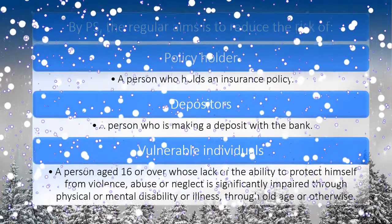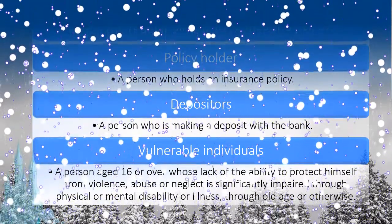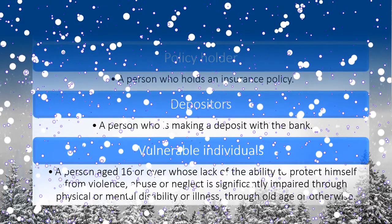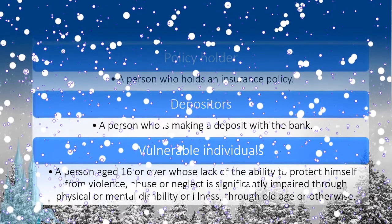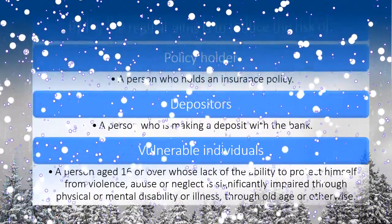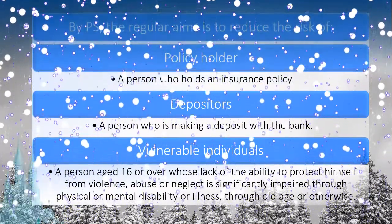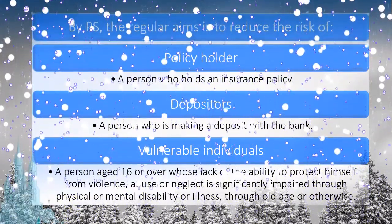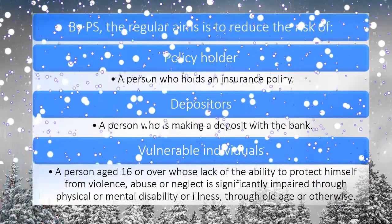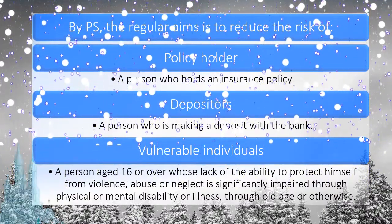A policyholder is the person who holds an insurance policy. Meanwhile, a depositor is a person who is making a deposit with the bank. And last but not least, vulnerable individuals means a person aged 16 or over whose lack of ability to protect himself from violence, abuse, or neglect is significantly impaired through physical or mental disability or illness.